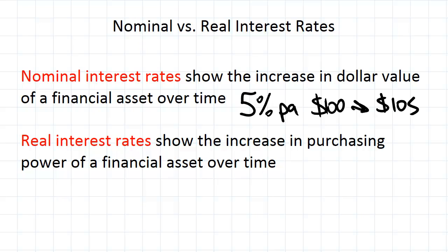The real interest rate adjusts the nominal rate for inflation, giving you the increase in purchasing power over time. For example, with a nominal interest rate of 5% per annum, if inflation was also at 5%, then with $100 you could initially buy one basket of goods. In the next year you would need $105 to buy that same basket of goods — which is exactly what you'd have in your financial asset — so the purchasing power of the financial asset has not changed.